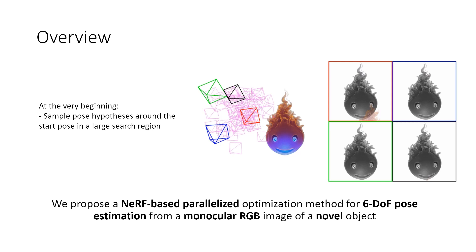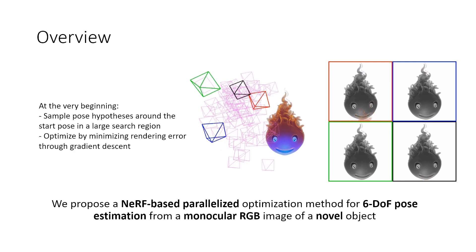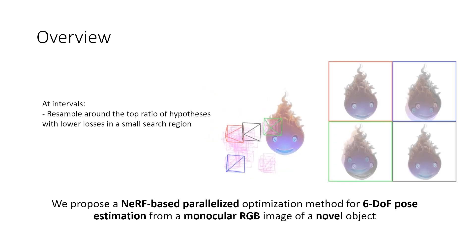We also show a ground truth rendering in grayscale as the background. Right now, only a partial view is visible. We optimize by minimizing rendering error through gradient descent. Note that after some iterations, some samples in the green circle will get closer to the target region. At intervals, we resample around the top ratio of hypotheses with lower losses in a small search region.